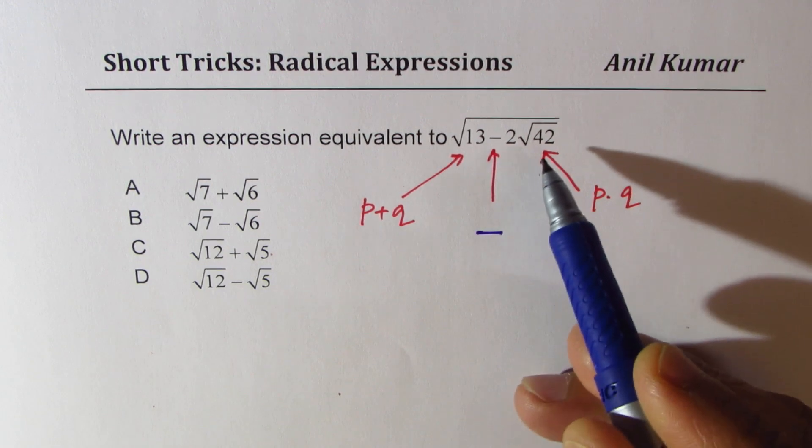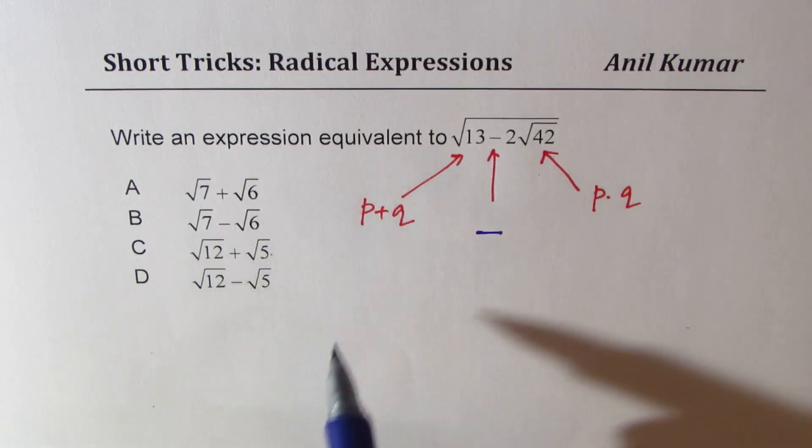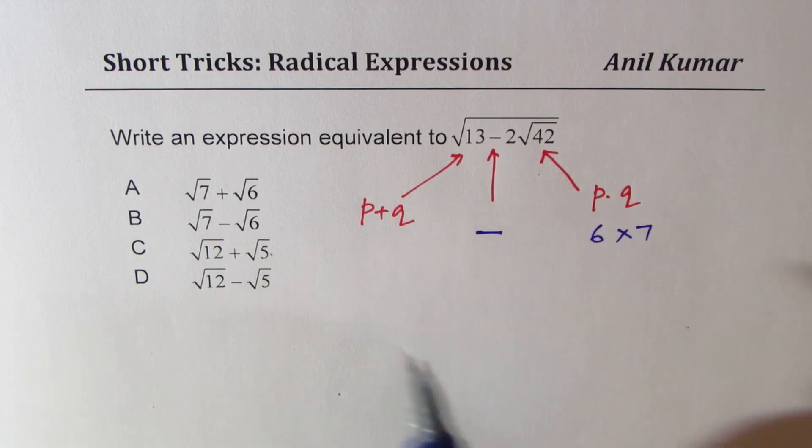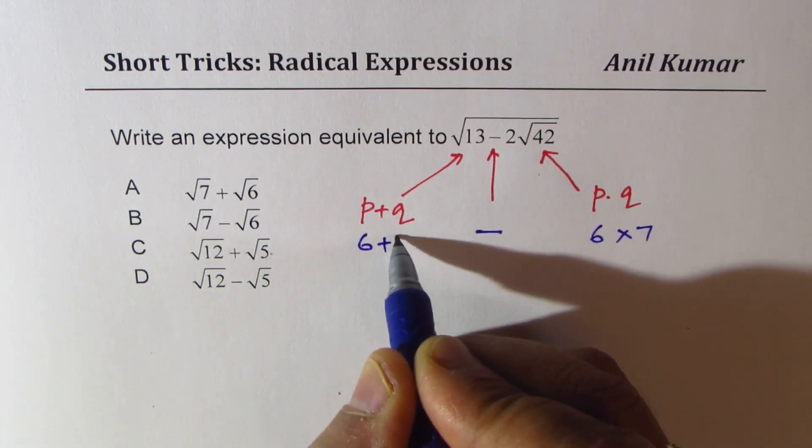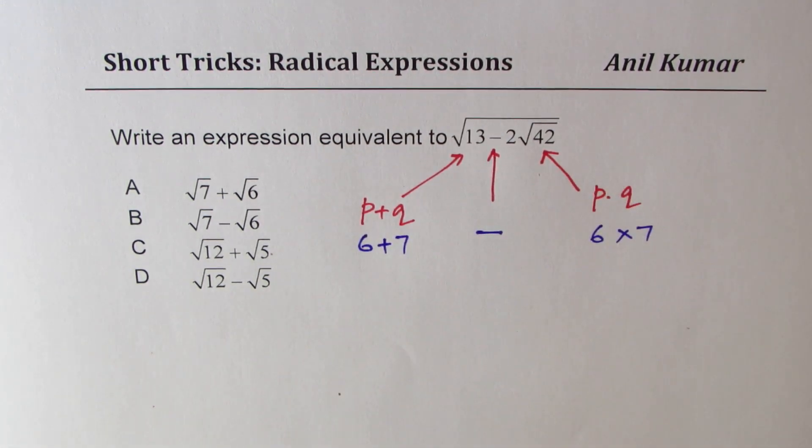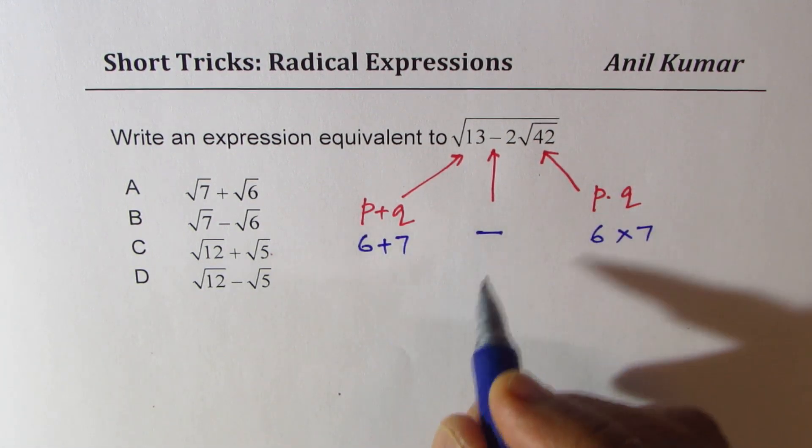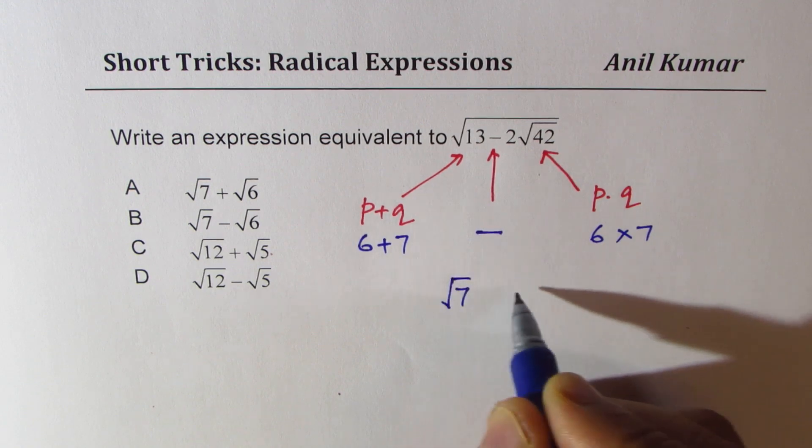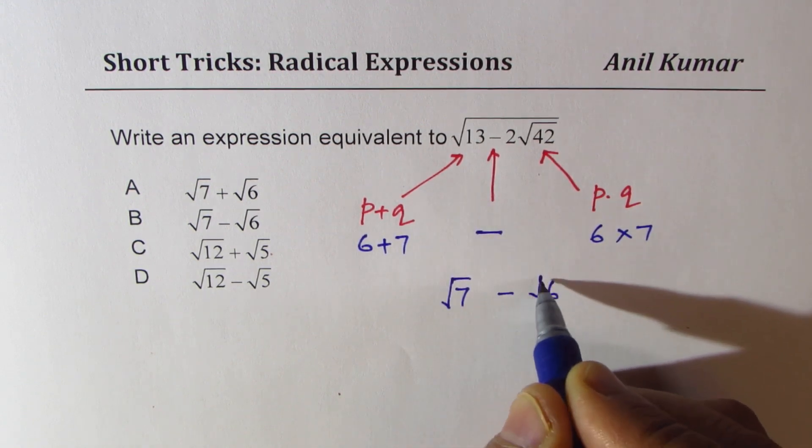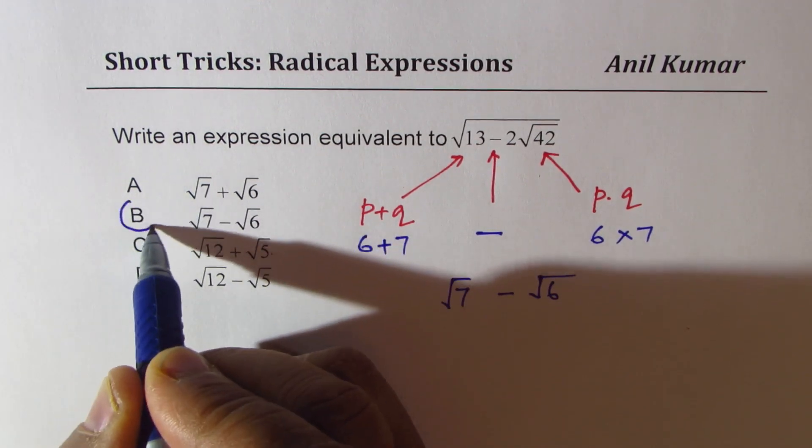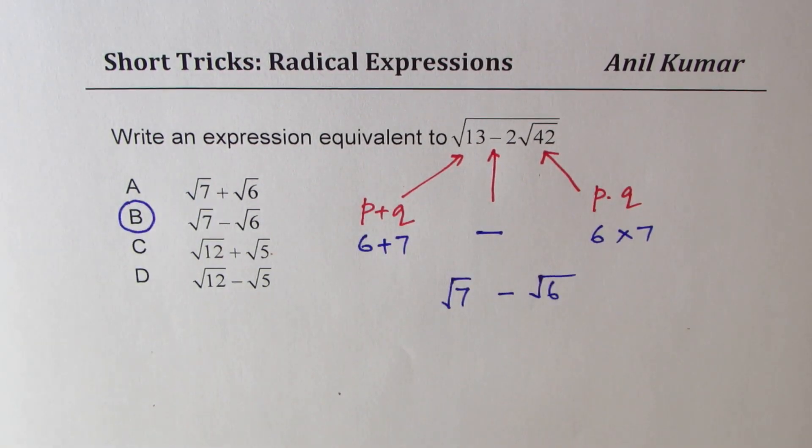How do you get 42 and 13? 6 times 7, right? 6 times 7 and 6 plus 7 gives you the answer. So the answer should have been 7 is a bigger number. So square root 7 minus square root 6 since this is negative. So option B is the right option.